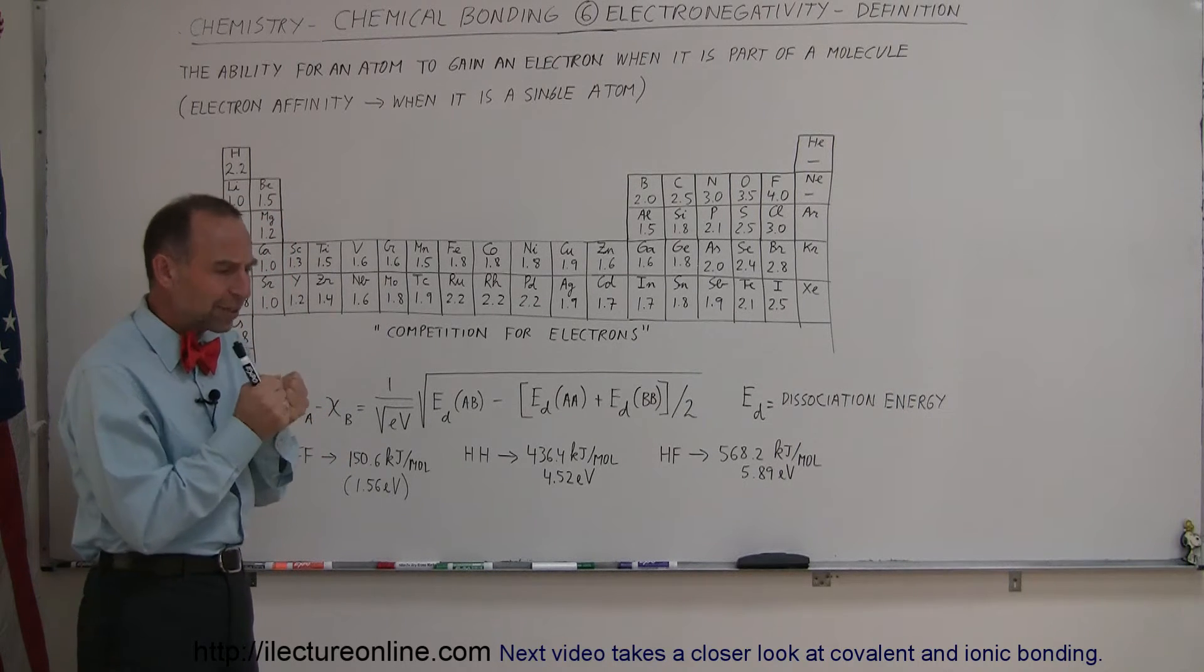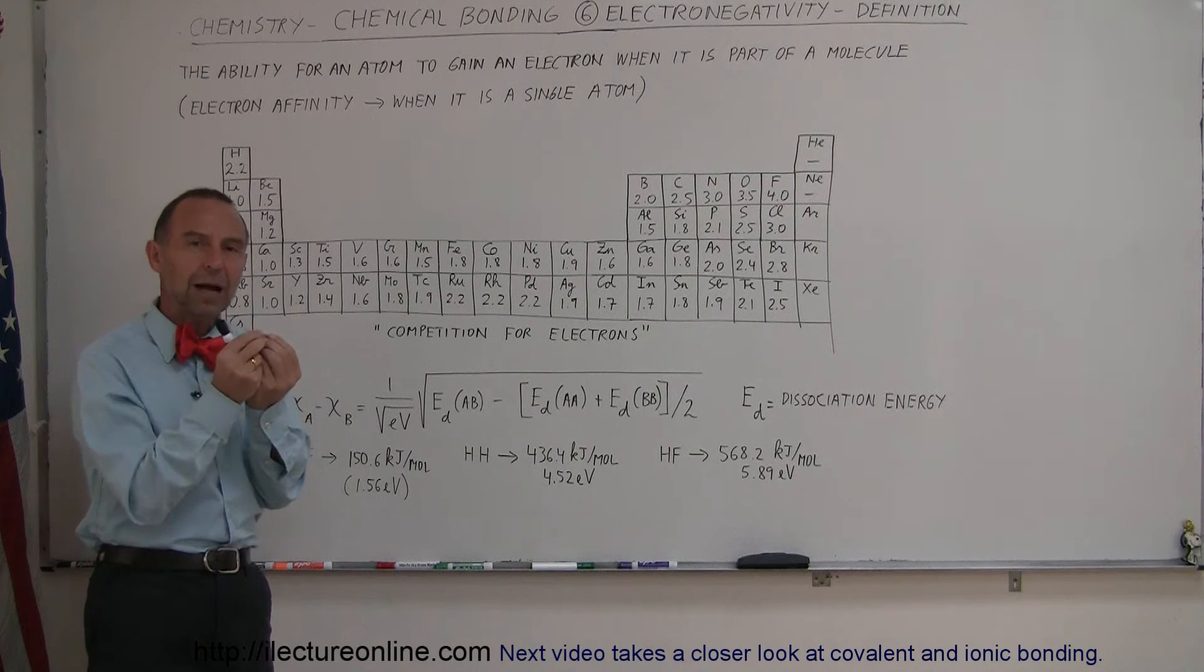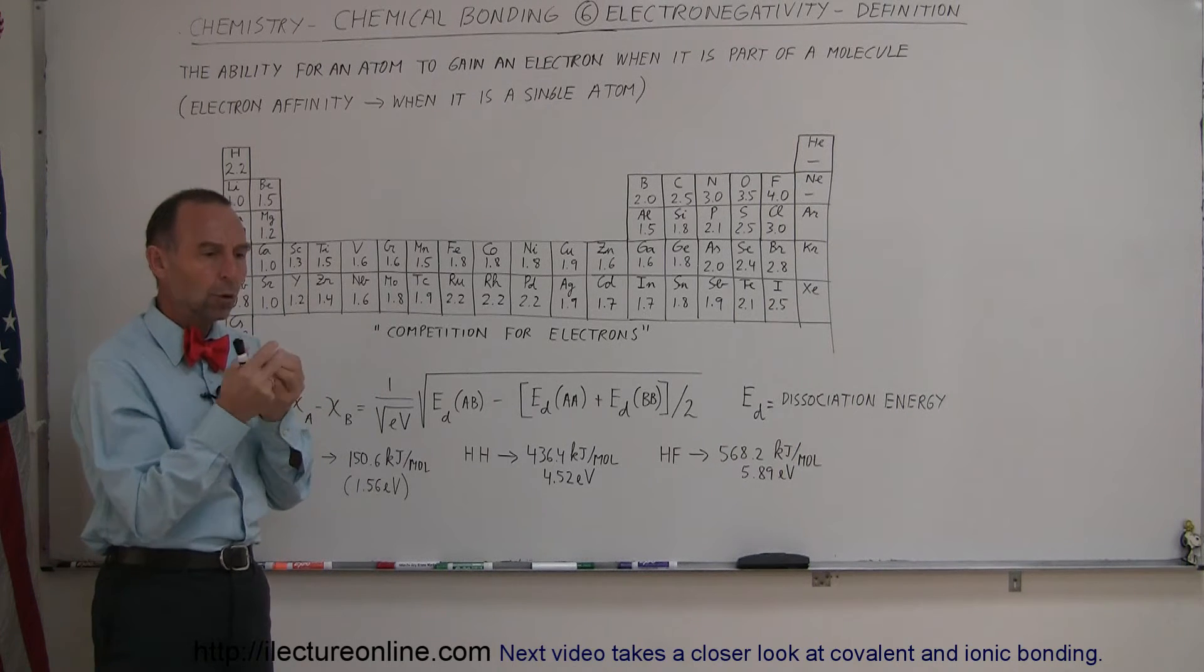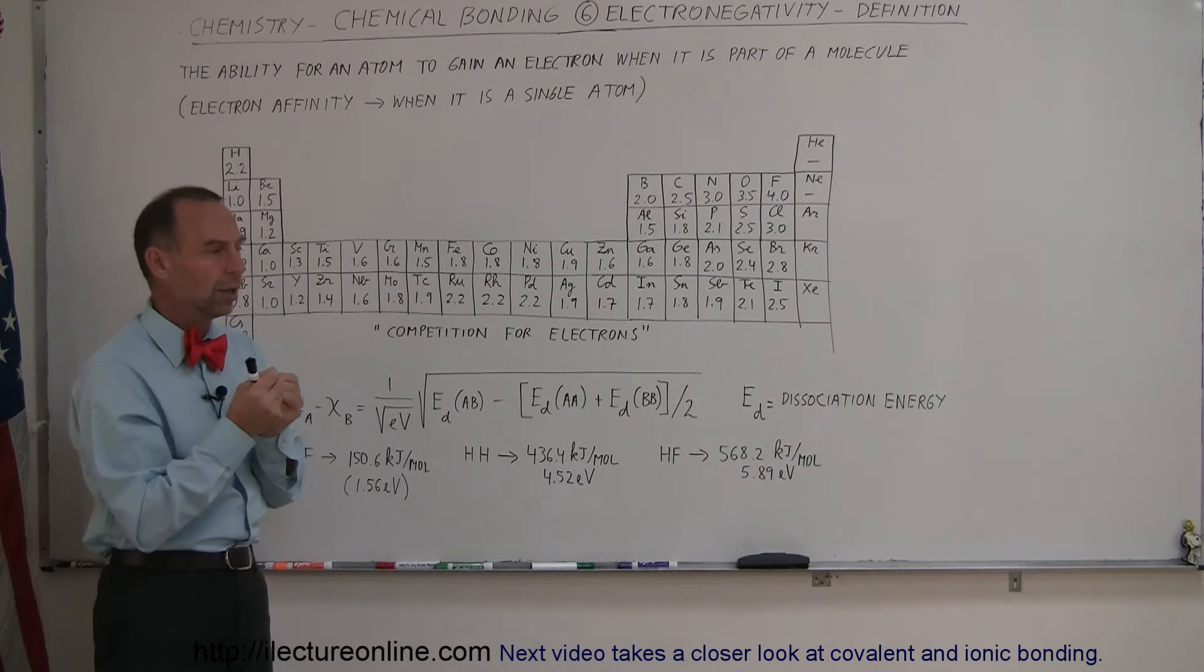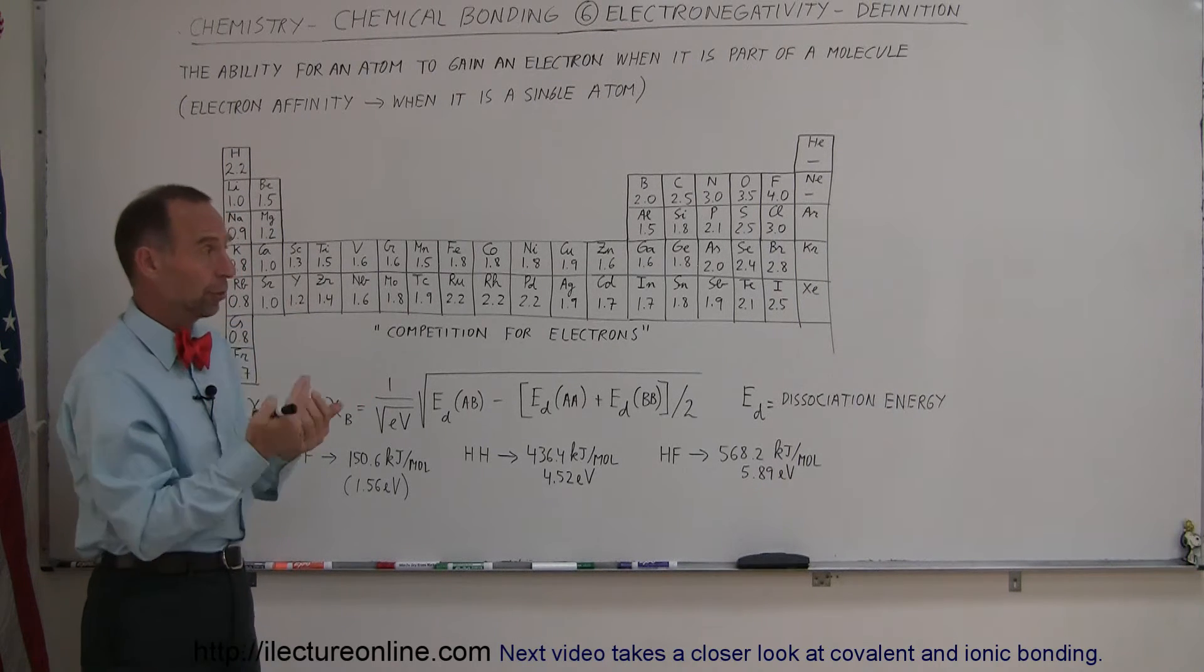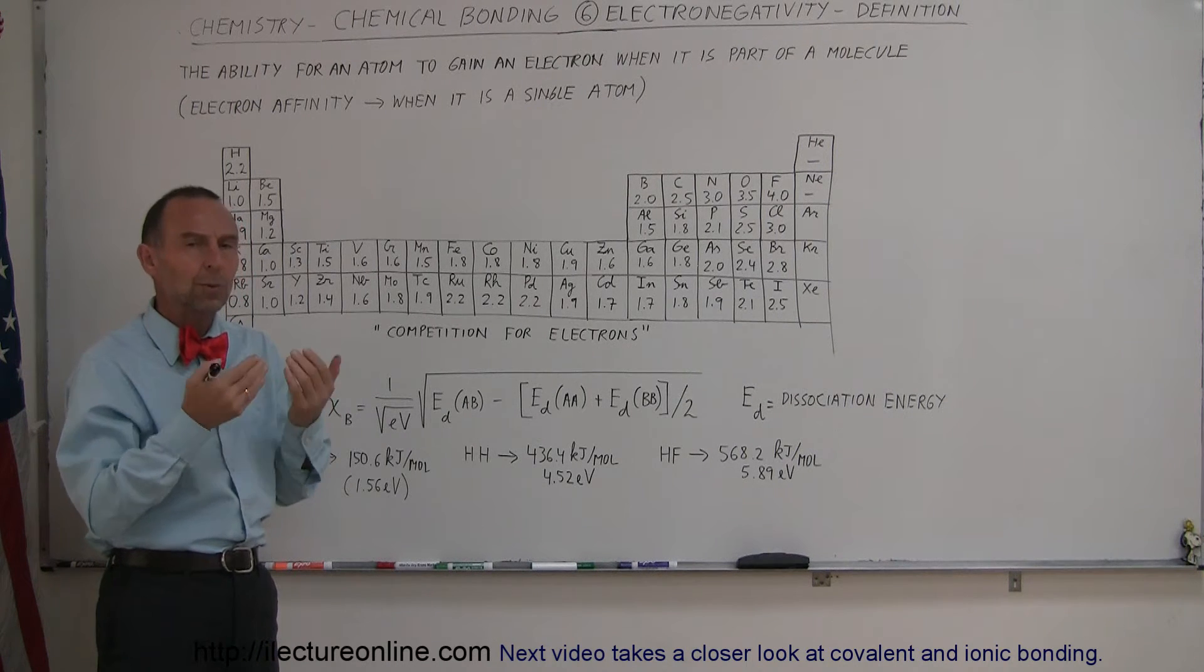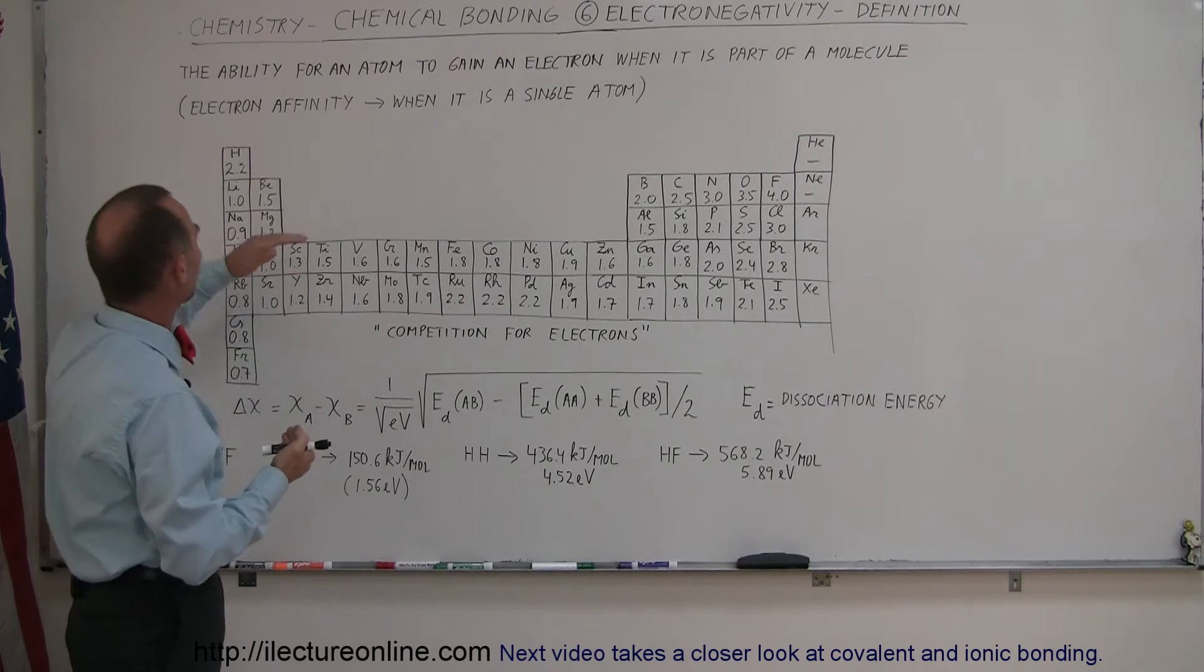So how do we figure that out? Well, that was always a big problem, because it is easier to figure out the strength of a bond, or the strength of a pull to an electron, when it's by itself. When a hydrogen atom or a fluorine atom is by itself,